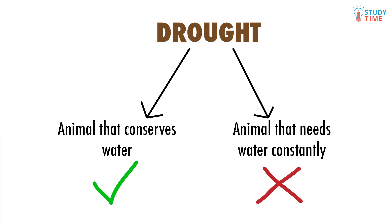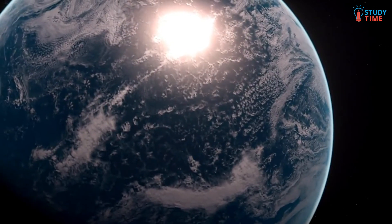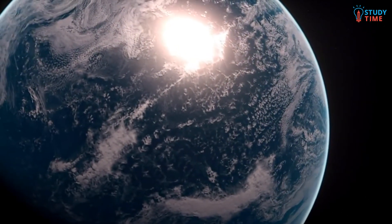When organisms with beneficial adaptations occur, it changes the population. Over time, there will eventually be more of this organism than the same organism without the beneficial adaptation. This new population will be more successful and outcompete the other. Genetic diversity within a species gives the species a greater chance of survival, just as genetic diversity across life helps life to persist on Earth.